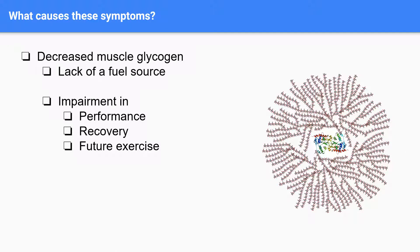So this is where muscle glycogen comes in. One cause of these symptoms can be linked to a decrease in muscle glycogen. This is because without muscle glycogen present to be used for energy, we do not have a fuel source to use during exercise. And this ends up impairing performance, your recovery time, and if it is not replenished, it will end up affecting future training.